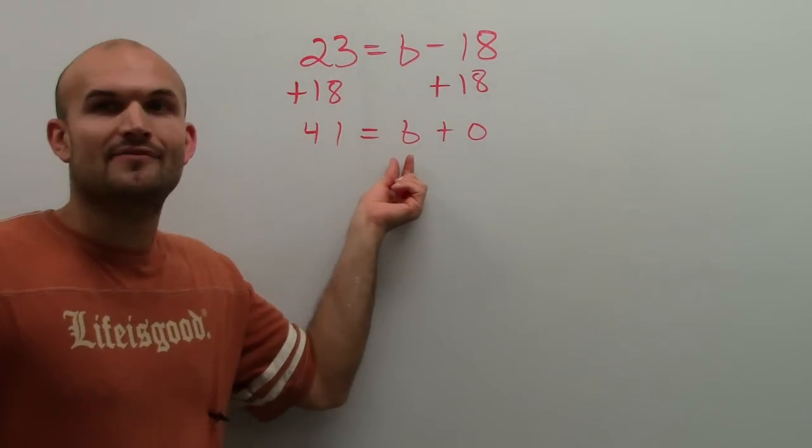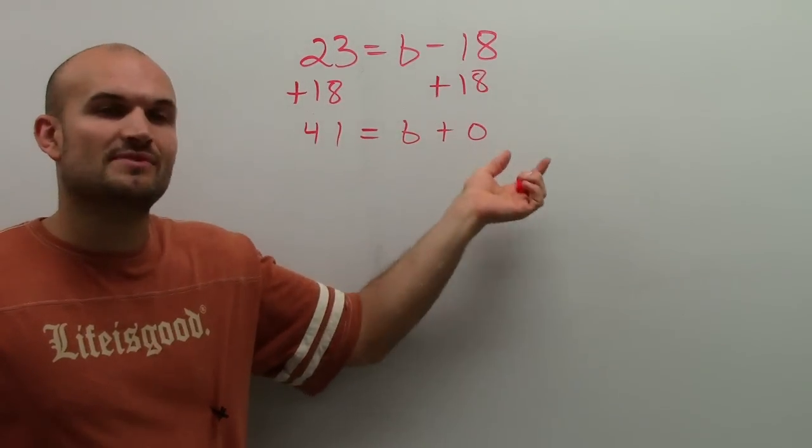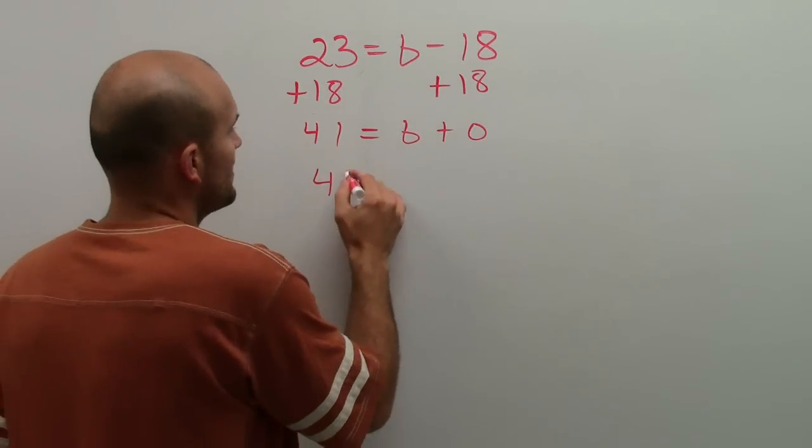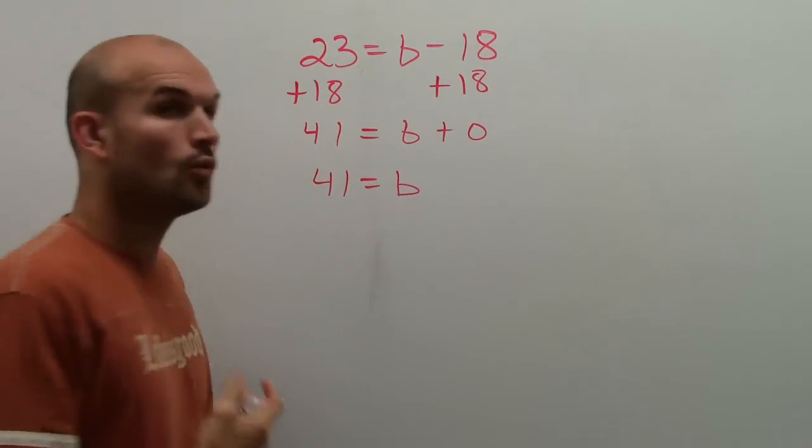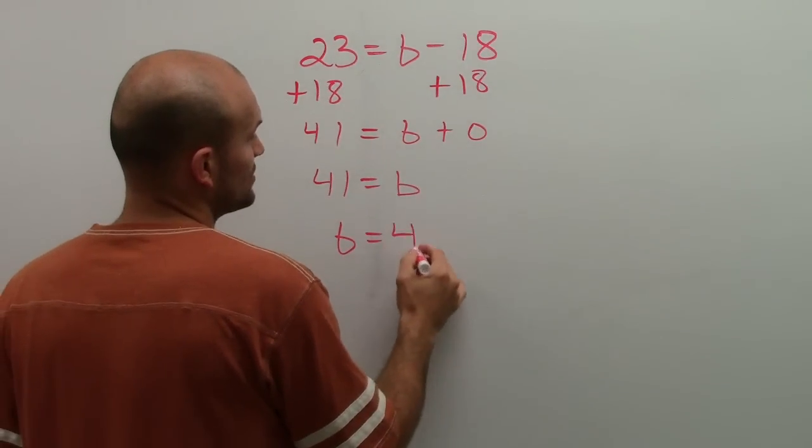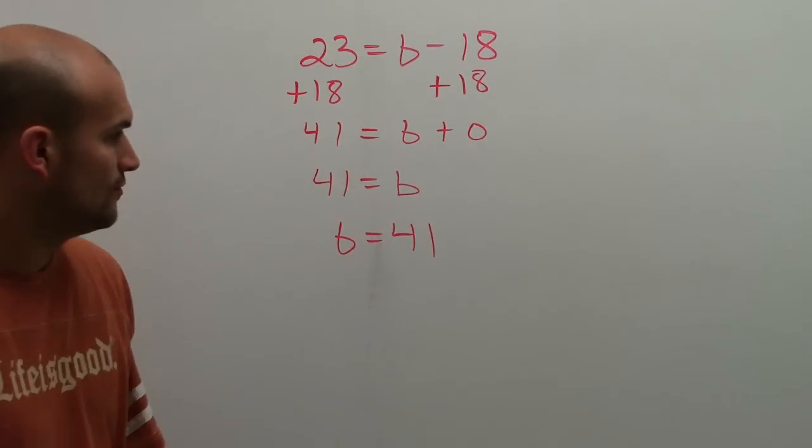Now, a variable plus 0, any number plus variable by the addition property of 0 is just going to give you back your variable. So I have 41 equals b, which we can now switch around with the reflexive property where b equals 41.